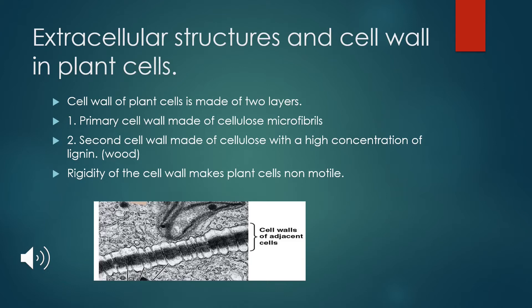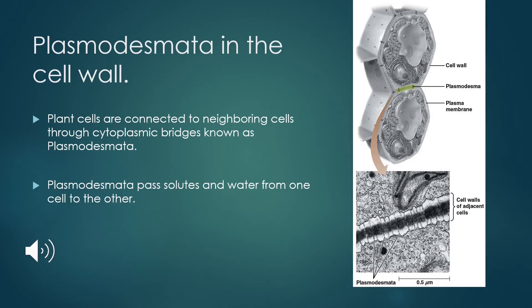Plant cell walls actually consist of two layers. The primary cell wall consists mainly of cellulose fibrils embedded in a gel-like polysaccharide matrix. Primary walls are quite flexible and extensible, which allows them to expand. Thicker and more rigid secondary cell walls have a higher content of lignin, otherwise known as wood. The rigidity of the cell wall makes plant cells non-motile. Plant cells are connected to neighboring cells through cytoplasmic bridges known as plasmodesmata, which pass solutes and water from one cell to the other.